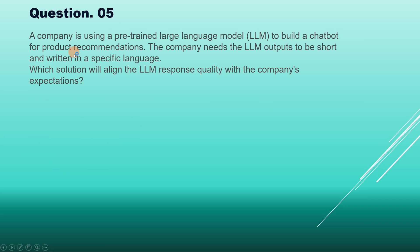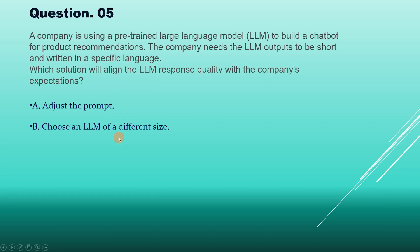Question 5: A company is using a pre-trained large language model (LLM) to build a chatbot for product recommendations. The company needs the LLM output to be short and written in a specific language. Which option will align the LLM response quality with the company's expectations? Options: A) Adjust the prompt, B) Choose an LLM of a different size, C) Increase the temperature, D) Increase the top K value.